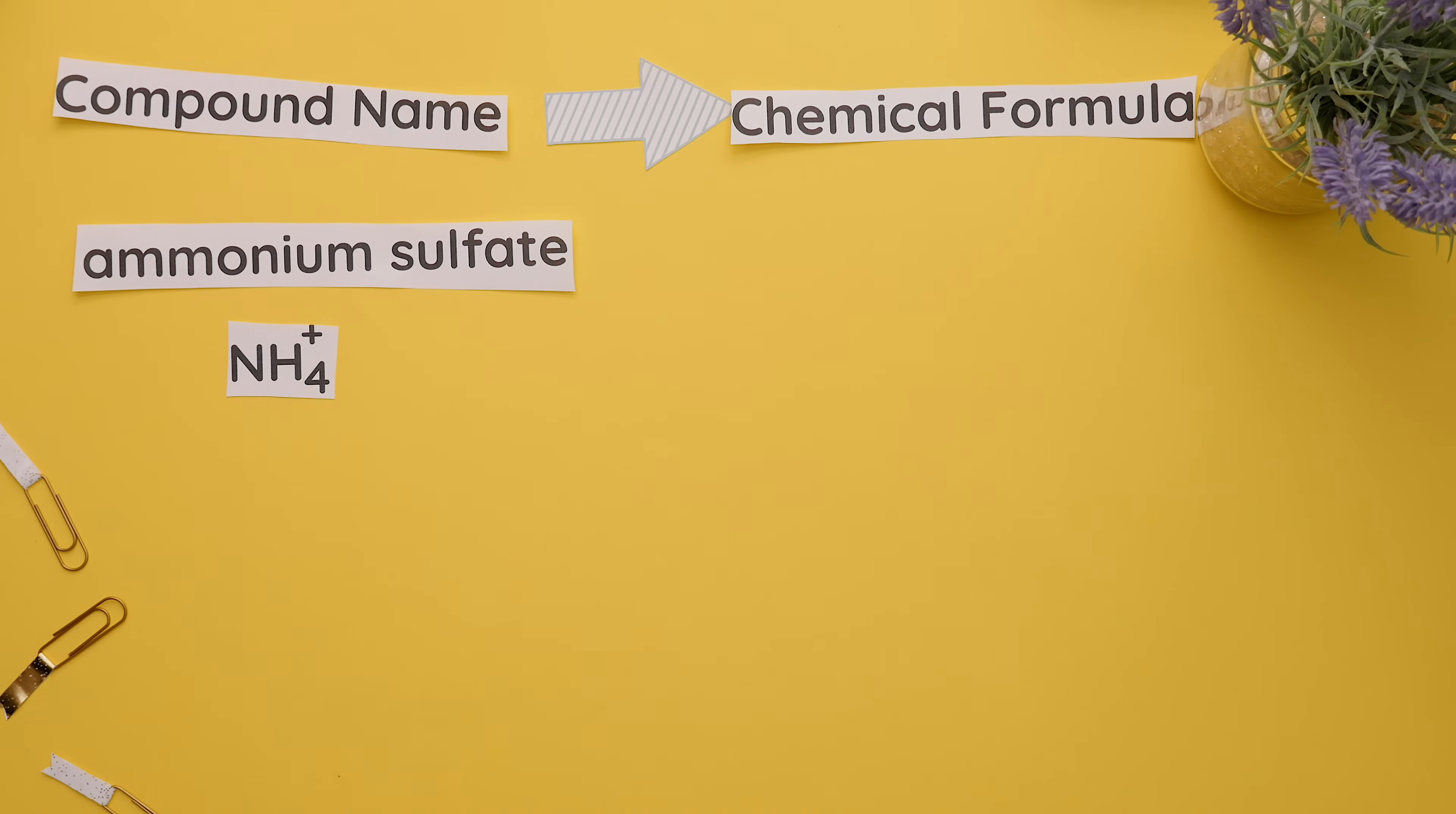Ammonium is NH4 with a 1 plus charge, and sulfate is SO4 with a 2 minus charge. To make the charges the same, the ammonium needs a 2 subscript, so ammonium will be in parentheses with a 2 subscript outside of the parentheses, followed by SO4. This is our chemical formula.